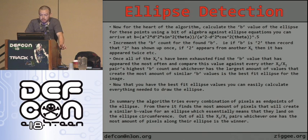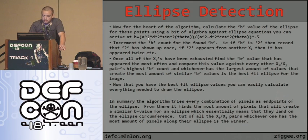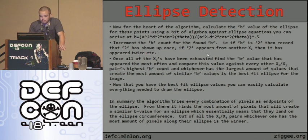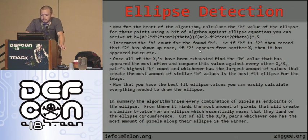At the heart of the algorithm, you calculate the b value of the ellipse for these points using a bit of algebra against the ellipse equation to derive this formula. That equation calculates b from all the other values you've already computed. Then you increment the b count for the found b value — so if b is two, you record that two has appeared once; if it appears from another xk, it's appeared twice; and so on. Once all xk's are exhausted, find the b value that appeared most often and compare it against every other xi-xj pair. The pair with the highest b count — the most similar b values — is the best fit ellipse for the image.